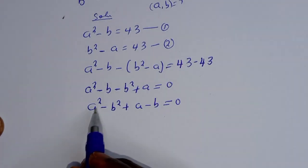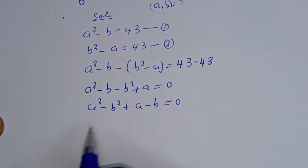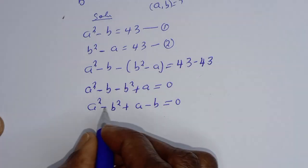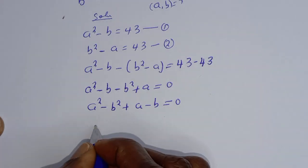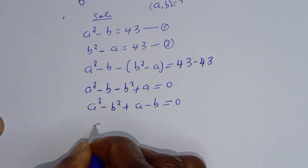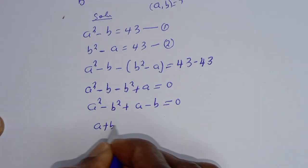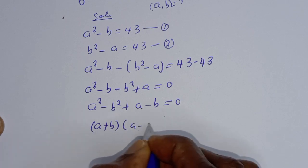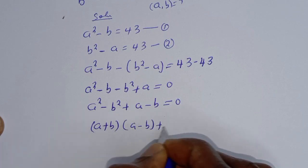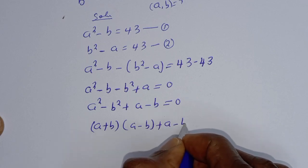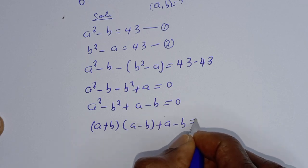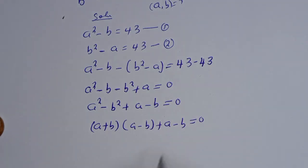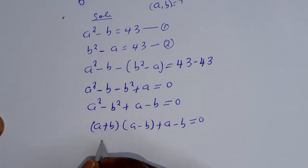Rearranging, this is A squared minus B squared plus A minus B is equal to 0. We have A squared minus B squared, which is a difference of squares. So this can be written as (A plus B)(A minus B) plus (A minus B) is equal to 0. Now, A minus B is common — let's factor it out.